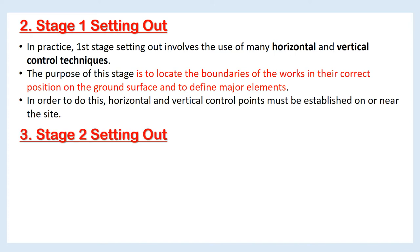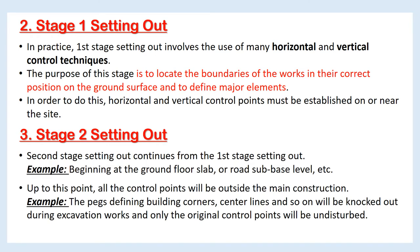Stage 2 setting out continues from the first stage setting out — for example, beginning at the ground floor slab or road sub-base level. Up to this point, all the control points will be outside the main construction. For example, the pegs defining building corners, center lines, and so on will be knocked out during excavation works, and only the original control points will remain undisturbed.